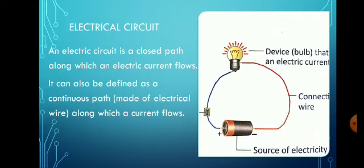Next, let's talk about the electric circuit. An electric circuit is a closed path along which an electric current flows. It can also be defined as the continuous path made up of electric wire along which a current flows. In the diagram, you can see how the electric current flows — the cell, which is the source of electricity, is connected with the help of connecting wires to a device, which is the bulb, and there is also a switch responsible for making or breaking the circuit.